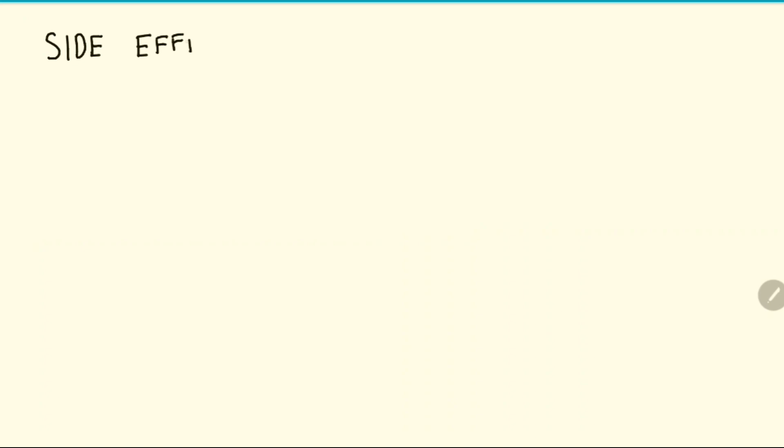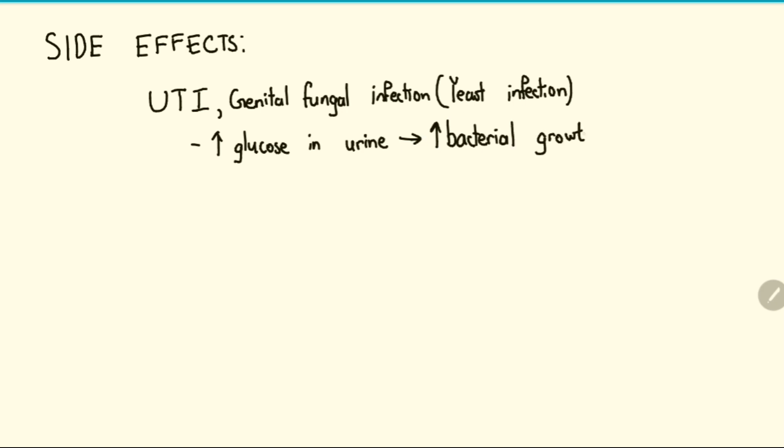Looking at the side effects of SGLT2 inhibitors, urinary tract infections and genital fungal infections, such as yeast infections, are more common in patients taking this medication. This is due to the increase in glucose in the urine, which promotes bacterial growth in the urinary tract.